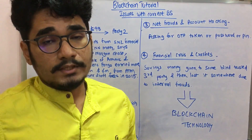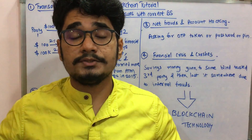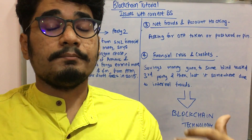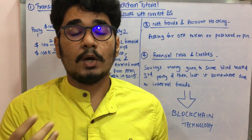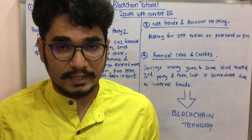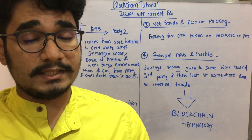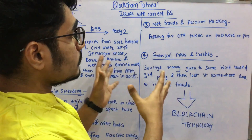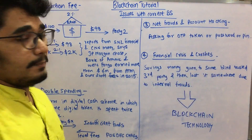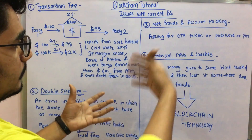Next you have the third type of issue with the current banking system — net frauds and account hacking. It's like someone posing as a customer care representative from a particular XYZ bank calling you and asking for your OTP, code, or password. This is more prevalent in India, where many customers get cheated this way. Asking for an OTP, password, or PIN is a major case of net frauds and account hacking in the current banking system.